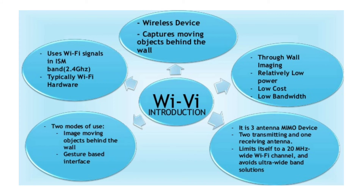Wi-Vi uses Wi-Fi signals in the ISM band at 2.4 GHz with typical Wi-Fi hardware. It is a wireless device that captures moving objects behind the wall. It features relatively low power, low cost, and low bandwidth — requiring only low bandwidth due to the short range it operates over.